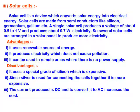Advantages of solar energy: it is a renewable source of energy, produces electricity without causing pollution, and can be used in remote areas where there is no power supply. Disadvantages: it uses a special grid of silicon which is very expensive; silver is used for connecting the cells together, making it more expensive. It produces DC (direct current), which must be converted to AC (alternating current), increasing the cost.